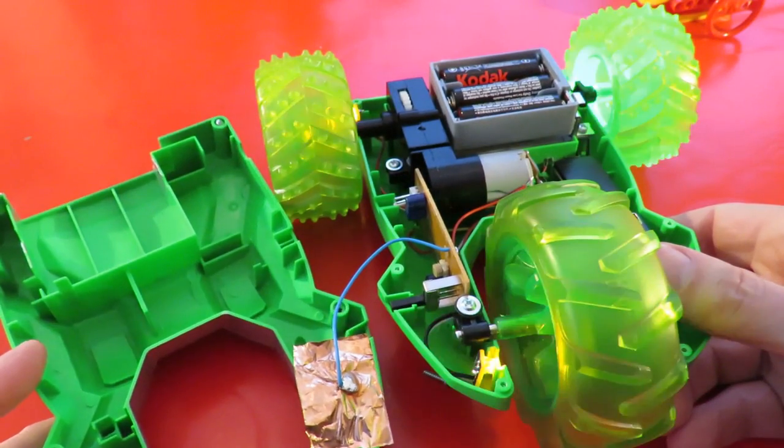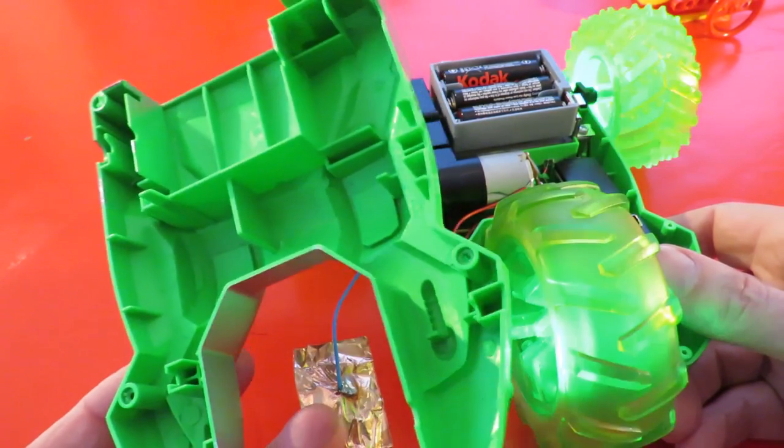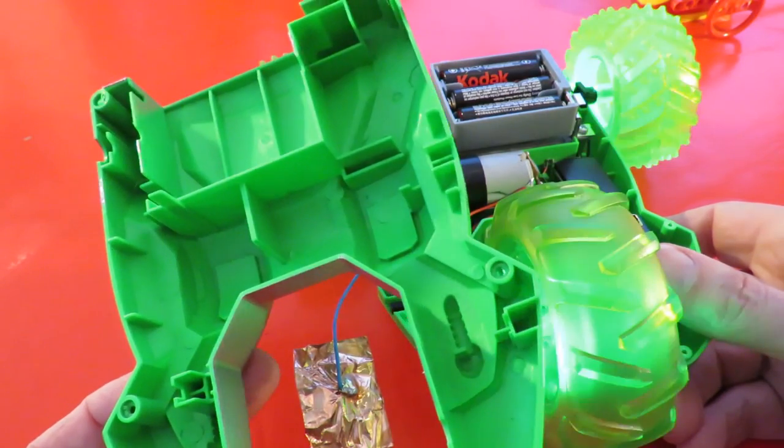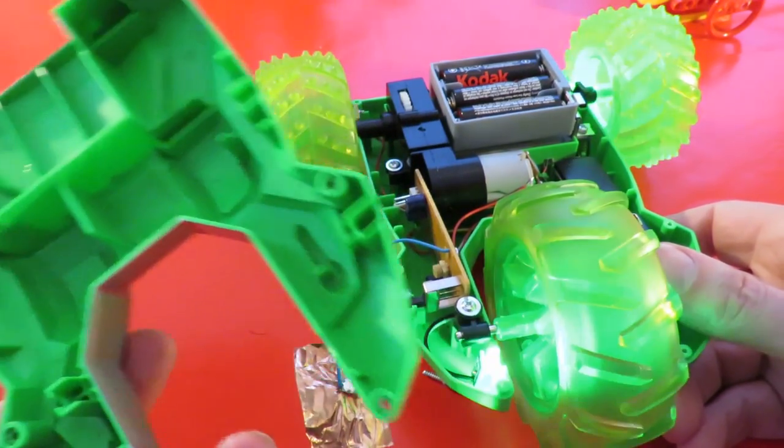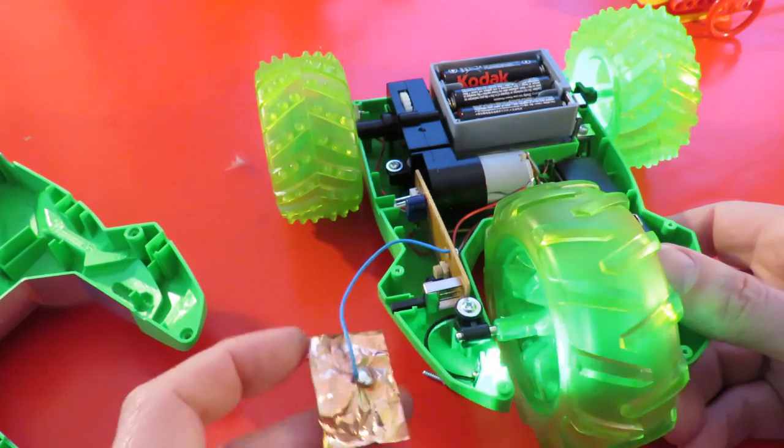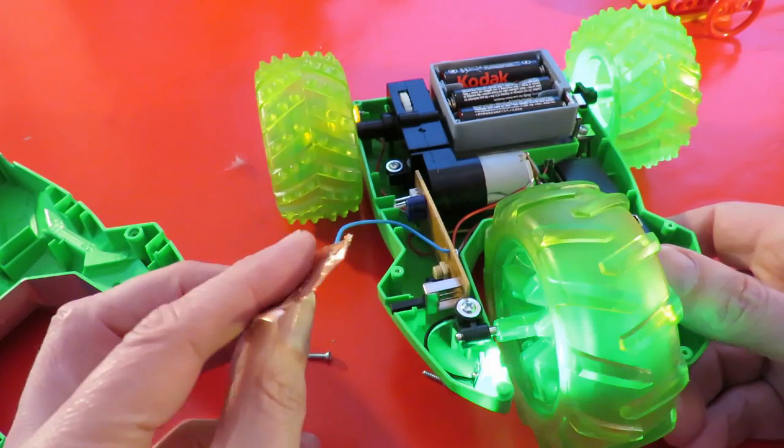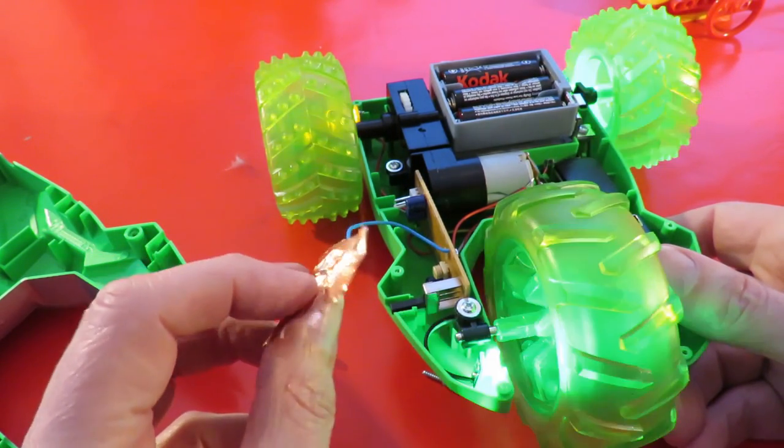So what can we see inside? We'll call that the top. Obviously it's reversible, works both ways up. That's the antenna, which is a bit of sticky backed copper.